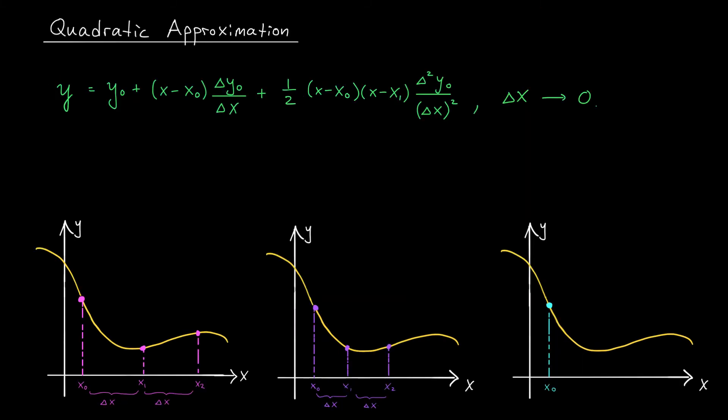Okay, we're moving from linear to quadratic approximations. So once again, I have this function in yellow, y equals f(x), and I want to approximate the behavior of this function near the point x equals x_0. I don't want to use a line this time. I want to use a parabola. I want to find a parabola whose graph matches what my function is doing around this point.